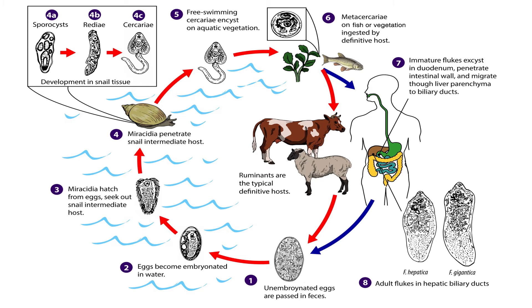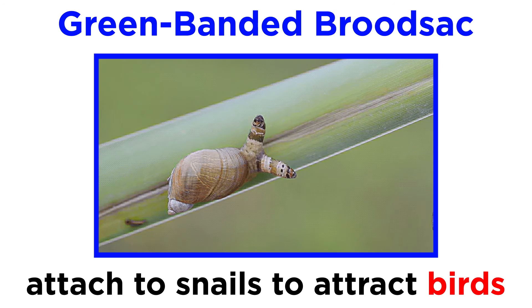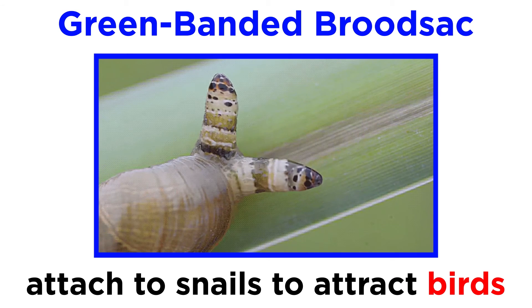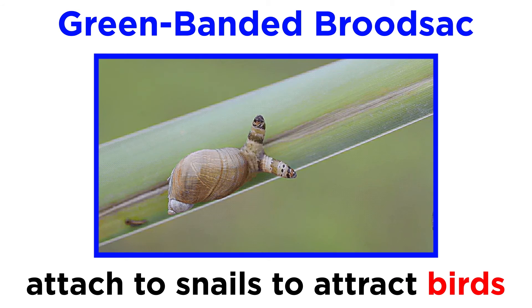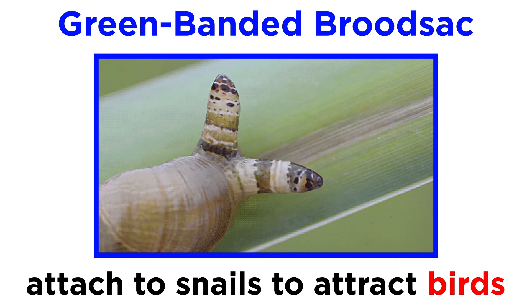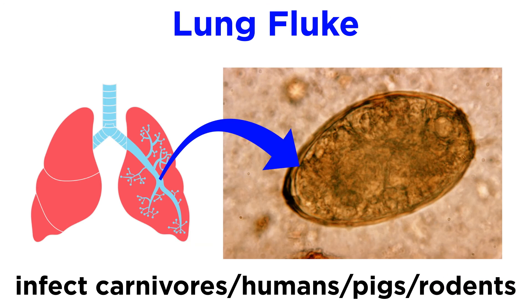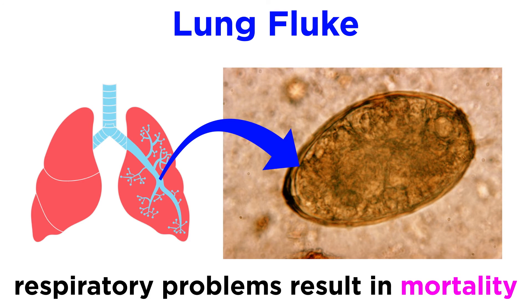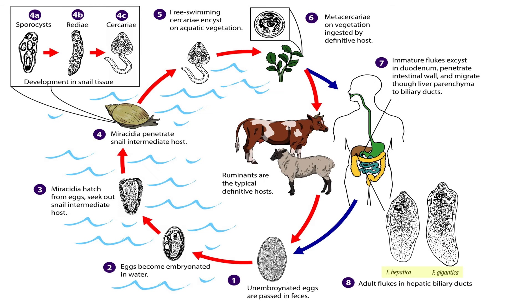All of this describes the life cycle of just one species of trematode. There are many others that connect a wide range of hosts. Some, like the green-banded broodsack, force themselves into the eye stalks of a snail to attract birds. Others, like the lung flukes, infect a wide range of wild carnivores, humans, pigs, and rodents, and cause respiratory problems which commonly result in mortality.